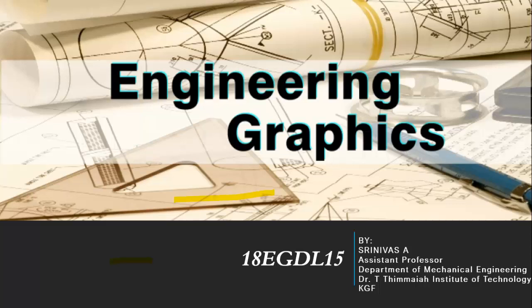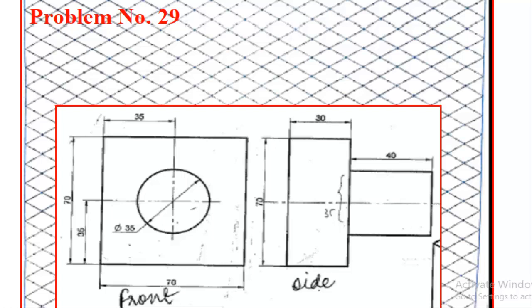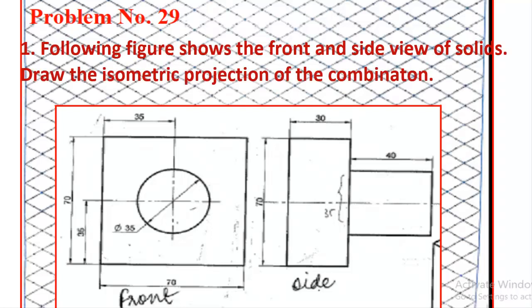Welcome back to engineering graphics class. In this session, we will discuss how to draw isometric projections using isometric sheets. Let me discuss problem number 29. Here they have given the following figure showing the front and side view of a solid. Draw the isometric projection of this combination.